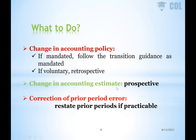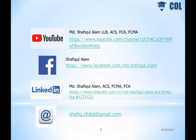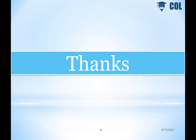Change in accounting estimate is always prospective. Change in accounting policy is similar - it is prospective. In the case of correction of a prior period error, you need to restate prior periods if practicable. You need to restate your prior period statements, which is why a three-column balance sheet presentation is required under IFRS for SME Section 10. Thanks and Assalamualaikum.